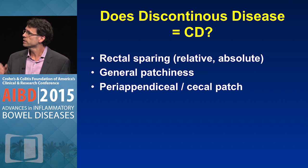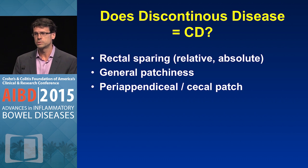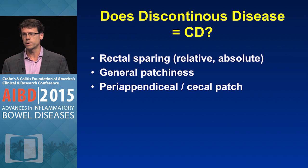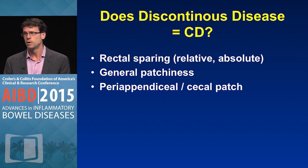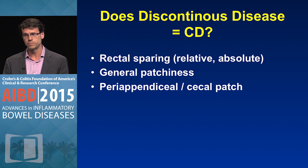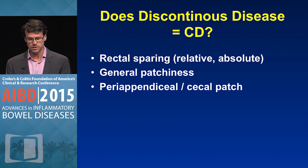I'd like to start with: does discontinuous disease mean that you have Crohn's? We'll talk about rectal sparing, which can be relative — where the rectum is less involved — or absolute — meaning no inflammation — as well as general patchiness and specifically the peri-appendiceal or cecal patch.